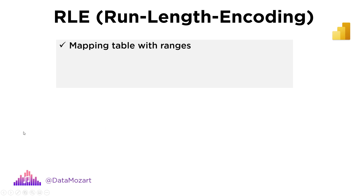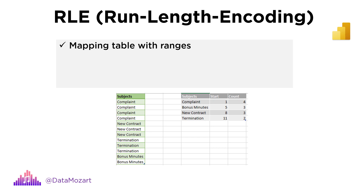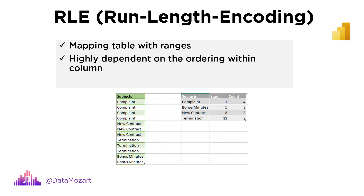The third algorithm, run length encoding, creates a mapping table containing ranges of repeating values, avoiding storing every single repeated value separately. In reality, VertiPaq doesn't store start values because it can quickly calculate where the next segment begins by summing previous count values. However, run length encoding is highly dependent on the ordering within the column. If data is stored with many repeating values in buckets, run length encoding will perform great. However, if your data buckets are smaller and rotate more frequently, then run length encoding would not be an optimal solution.